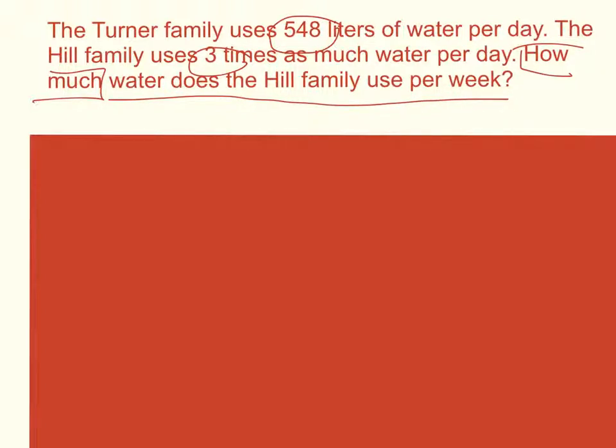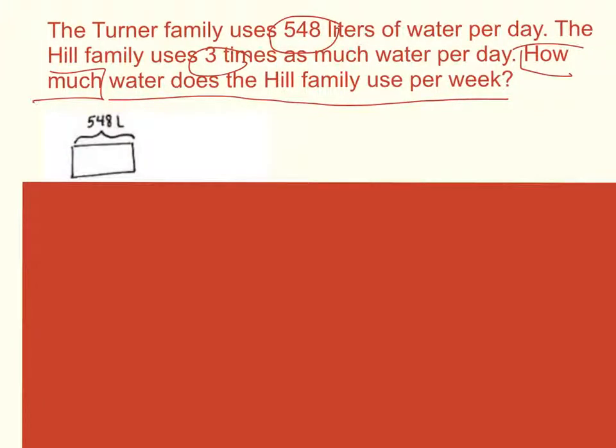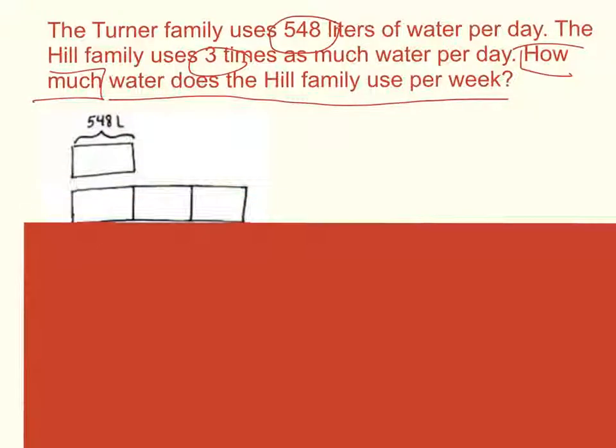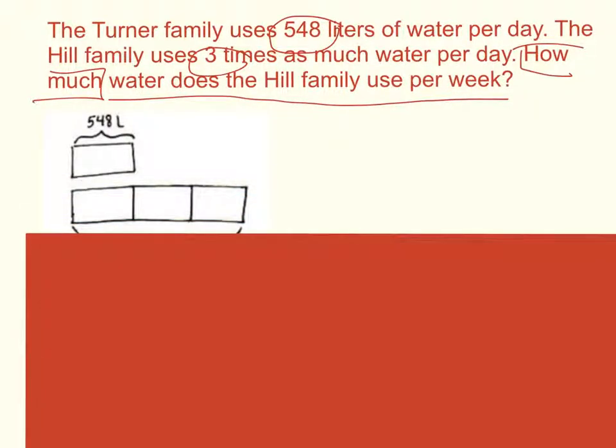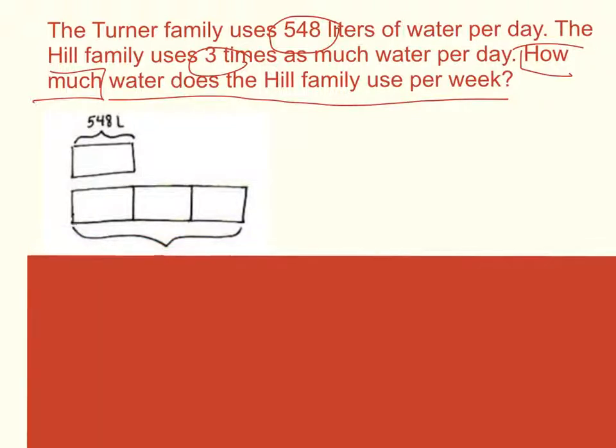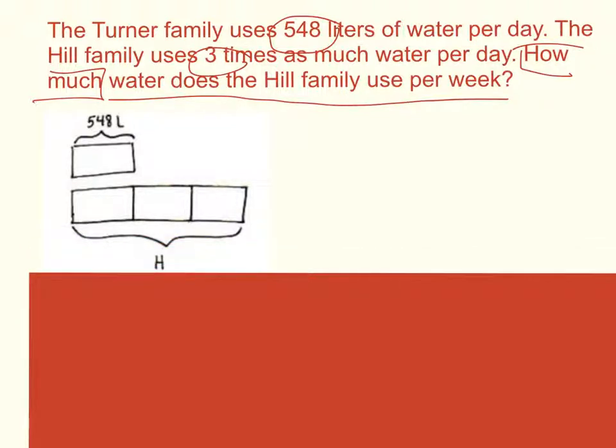First, let's go ahead and set up a diagram to show us how this will look visually. I know that the Turner family uses 548 liters per day, and then the Hill family uses three times as much. So I know that the Hill family will use 548 plus 548 plus 548, or 548 times 1, 2, 3. And that will give me my total of what the Hill family uses per day. Let's go ahead and solve that problem.